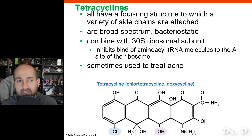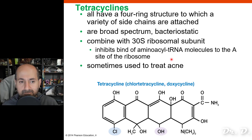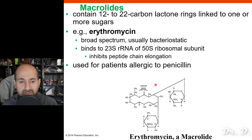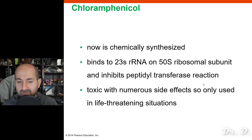Tetracyclines — named for their four-ring structure — combine with the small subunit of the ribosome, preventing tRNA from doing its job. Macrolides, including erythromycin, bind to the large subunit and prevent peptide bonds from forming. Chloramphenicol also binds to the large subunit and prevents the peptidyltransferase reaction. All of these prevent translation from happening.